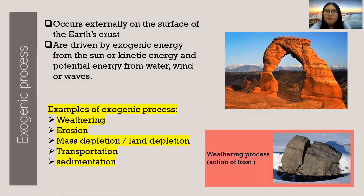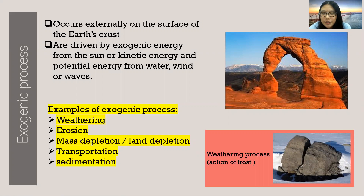If you look on the right, the picture of a rock is going through the action of frost. This is when frost freezes inside the cracks of the rocks. It expands and produces cracks that break the rocks into pieces. Next, we have erosion — the gradual diminution and abrasion of rock surfaces through wind, glacier, flowing water or waves.